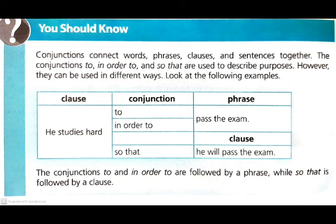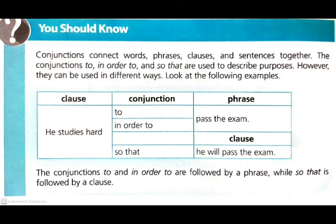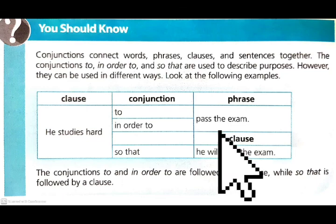Artinya, kata penghubung to dan in order to itu harus diikuti oleh phrase. Seperti yang ada dalam contoh: He studies hard to pass the exam. He studies hard in order to pass the exam. Jadi phrase disini adalah 'pass the exam'.